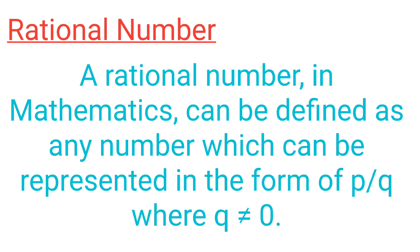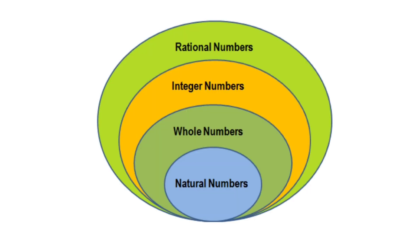The main thing we are going to study in this chapter is rational numbers. All the numbers we have studied so far together form rational numbers. Any number which can be written in the form of p upon q, where q is not equal to 0, is called a rational number. Numbers that cannot be written in p upon q form are irrational numbers. Between any two numbers, there are infinite rational numbers — for example, between 3 and 4, we can find unlimited rational numbers.